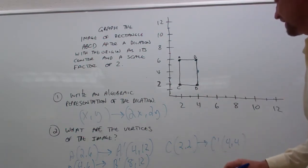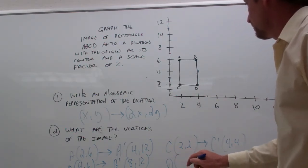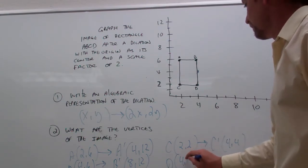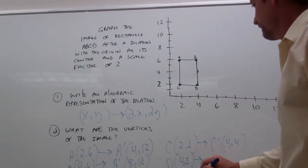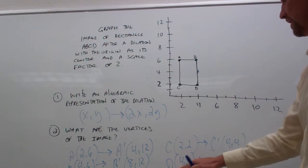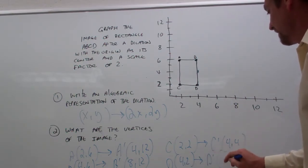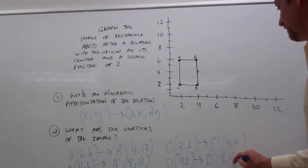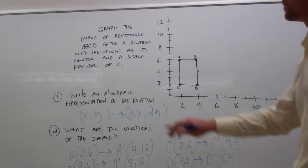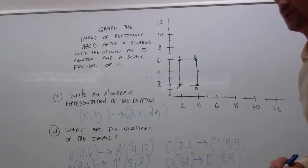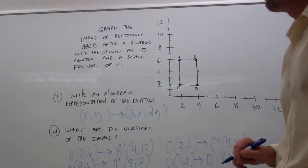And lastly, vertex D, which had coordinates of 4, 2, apply your rule, 2 times 4, D prime has coordinates of 8 and 4. So, now we can go ahead and graph the image of rectangle ABCD prime.